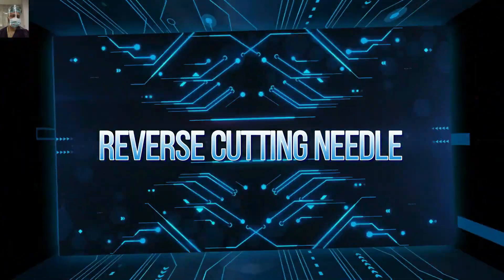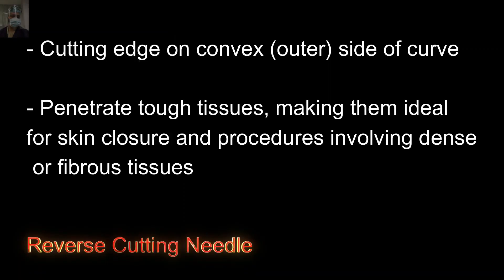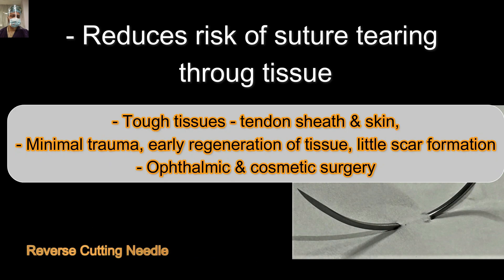First, the reverse cutting needle. There is a cutting edge on the convex side of the curve — that is, on the outer side of the needle. This allows it to penetrate tough tissue, making it ideal for skin closure and procedures involving dense or fibrous tissue. Remember that the reverse cutting needle and the conventional cutting needle will be the most common needles used during the initial part of your surgical career.